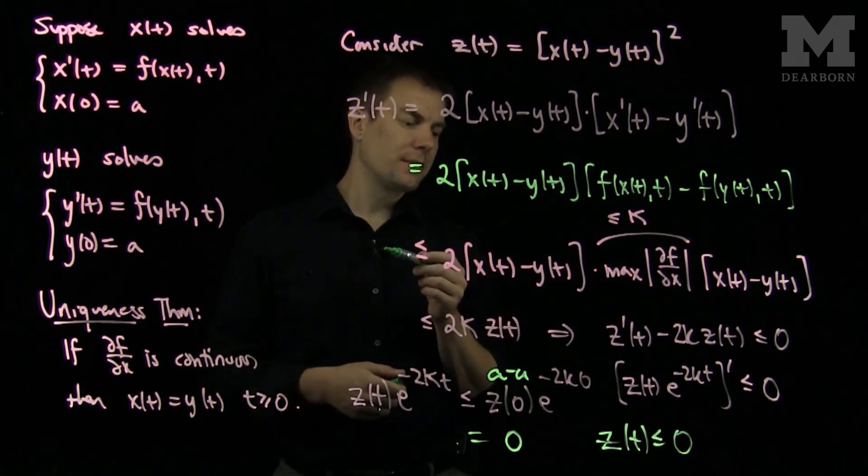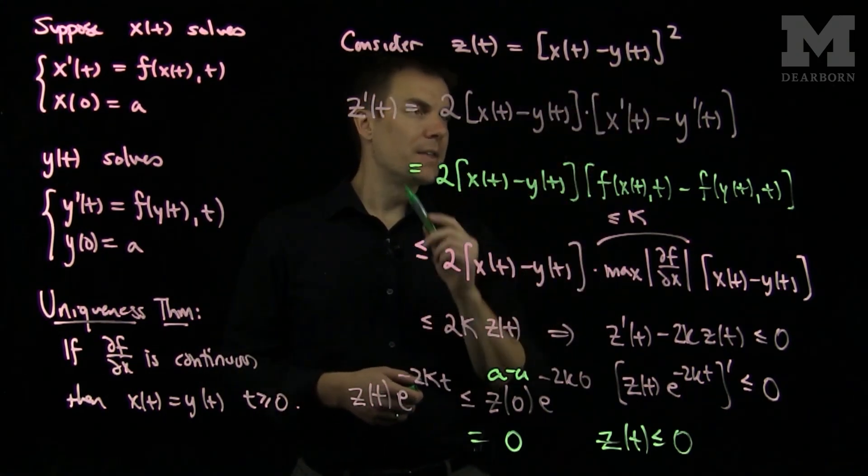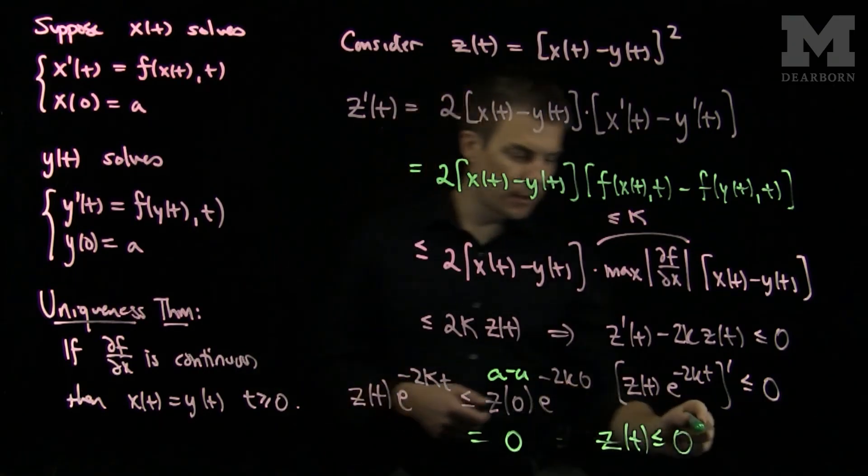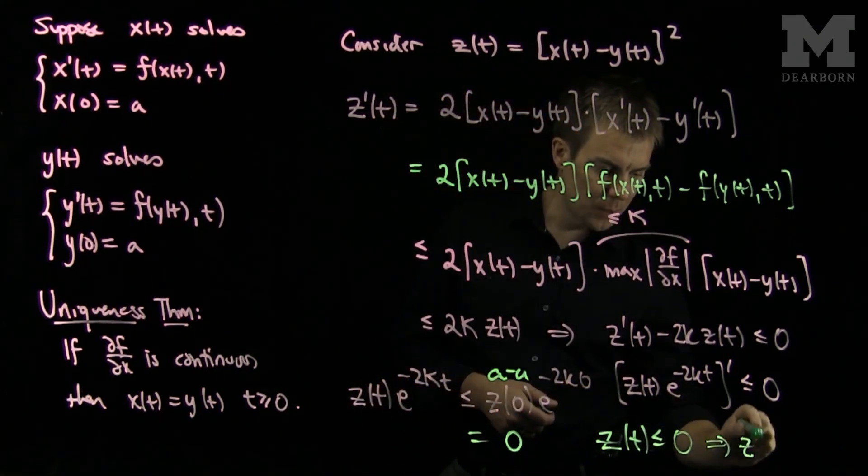But, z of t is a positive function, or non-negative. Therefore, z of t cannot be anything strictly less than 0. So, z of t is equal to 0.